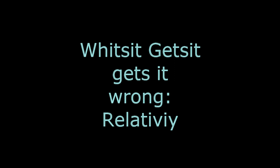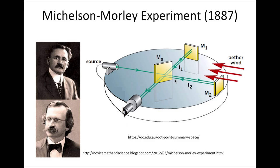When it comes to the movement of the earth, flat earthers always come up with the Michelson-Morley experiment. This experiment was meant to demonstrate the existence of the ether and failed to do so. Flat earthers consider the null result as proof of a stationary earth. Witsit, on the other hand, thinks Einstein explained away the null result by inventing length contraction in order to rescue the orbit of the earth around the sun.